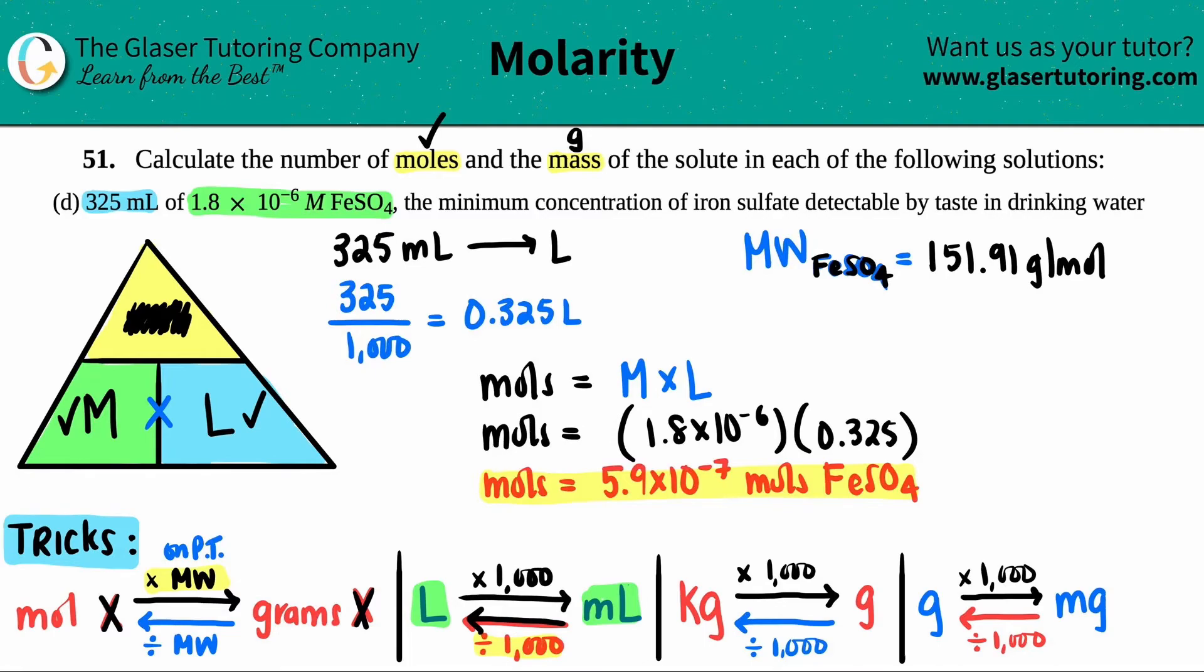Now, we take the moles, we times by the molar mass to get the grams. So 5.9 times 10 to the negative 7th, that's the moles, times the molecular weight, 151.91, and that will get us the grams. If we keep the units, this is a unit of moles times gram per mole. And look what happens to the mole units - they cancel. Mole on the top, mole on the bottom, and now we're just left with the unit of grams. So that's why this multiplication works nicely. So now let's just do it. I'm just going to times this by 5.9 times 10 to the negative 7th, and I'm going to keep with two sig figs here. So I get a number of 9.0 times 10 to the negative 5th, and that's grams of FeSO₄.